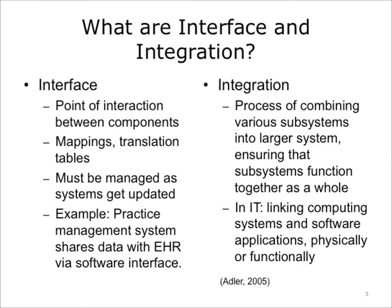Hospitals and other healthcare provider organizations typically have many different computer systems used for everything from billing records to patient tracking. All of these systems should communicate or interface with each other when they receive new information, but not all do so. Often when we speak of interfaces, we are referring to the interface between user and the computer, or the user interface, or UI. However, for today's lecture, when we talk about interfaces, we are referring to connections between two distinct systems. A single interface consists of both source and target systems, and each interface uses a map to define where to send incoming data on the way back out of the interface.